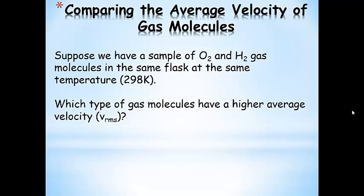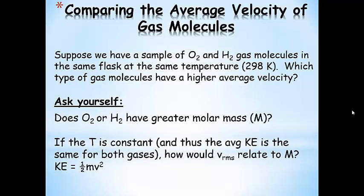Suppose we have a sample of oxygen and hydrogen gas molecules in the same flask at the same temperature — same volume, same temperature. Which type of gas molecules have a higher average velocity? Think about it: does oxygen or hydrogen gas have a greater molar mass? If the temperature is constant, the average kinetic energy is the same for both gases — how do you relate average velocity to molar mass? We can reason it out using the kinetic energy equation.